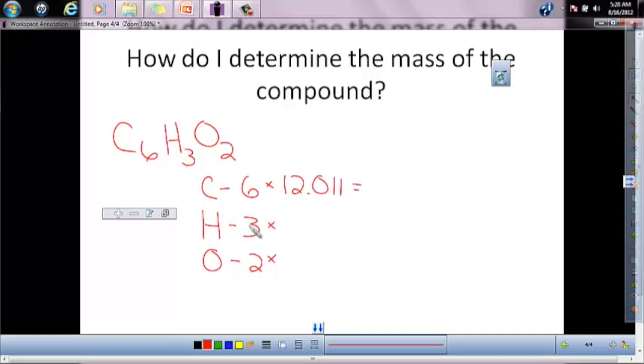Okay, now you want to do this for all the elements. So find hydrogen. What's the mass of hydrogen? 1.0079. Alright, and oxygen? 16.00. Good job.